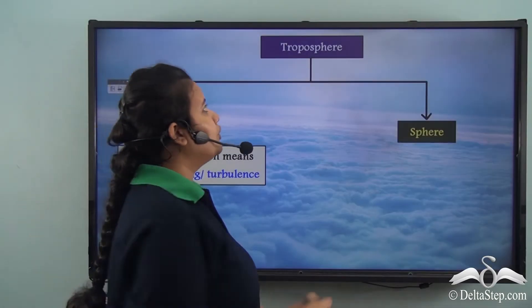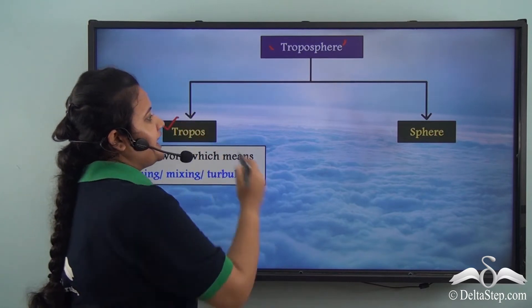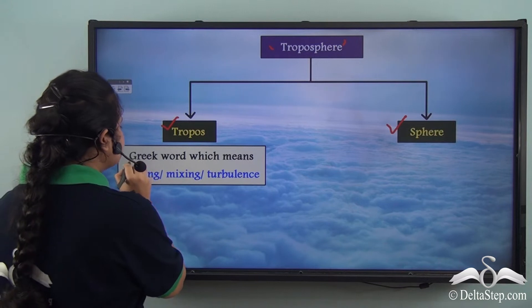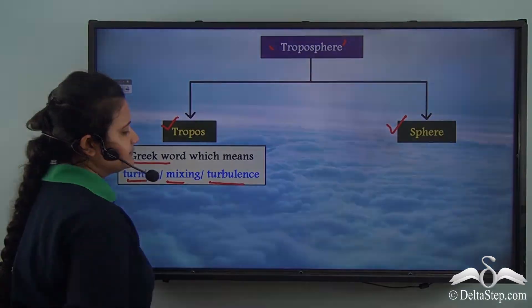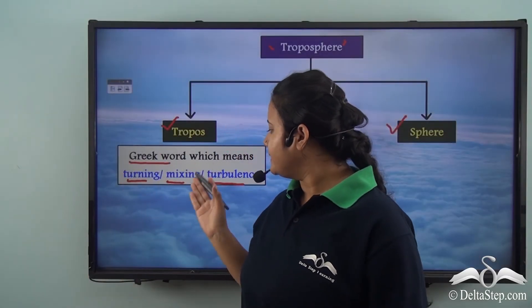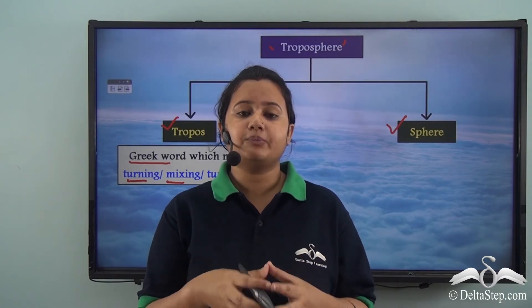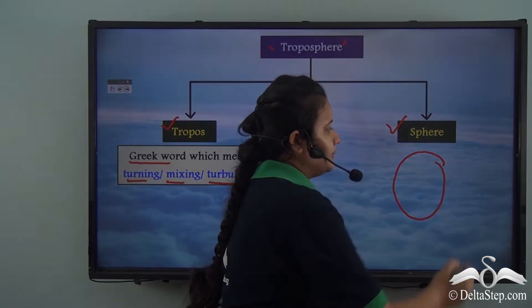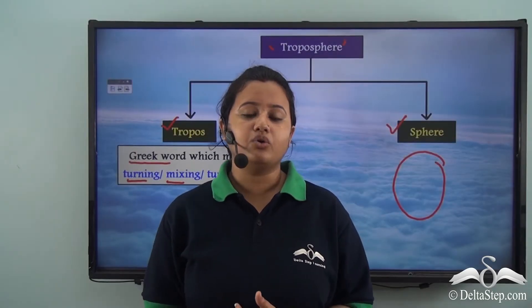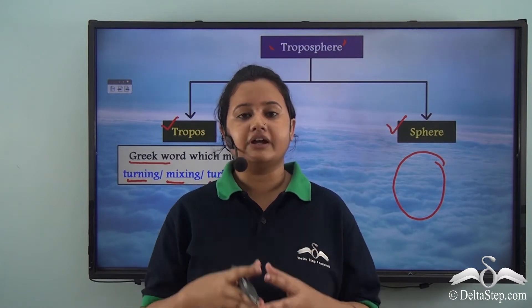The word 'troposphere' can be divided into two words: 'tropos' and 'sphere.' Tropos is a Greek word meaning turning, mixing, or turbulence — implying the constant changes in weather that take place in the troposphere. Sphere means globe or ball. So troposphere as a whole implies a layer where there is constant change in weather conditions.